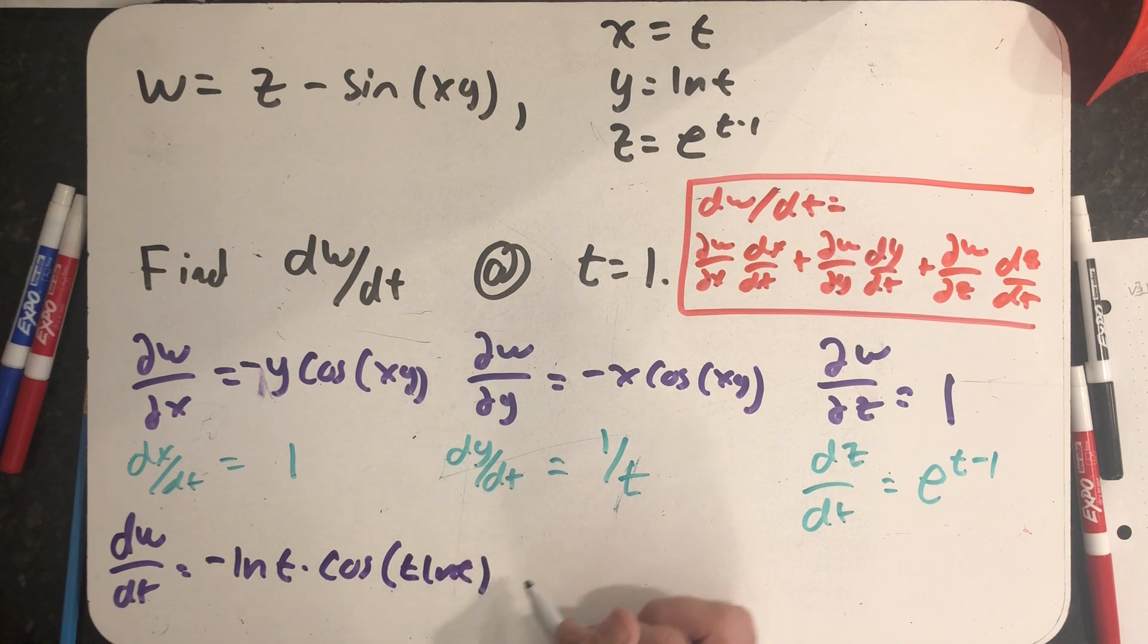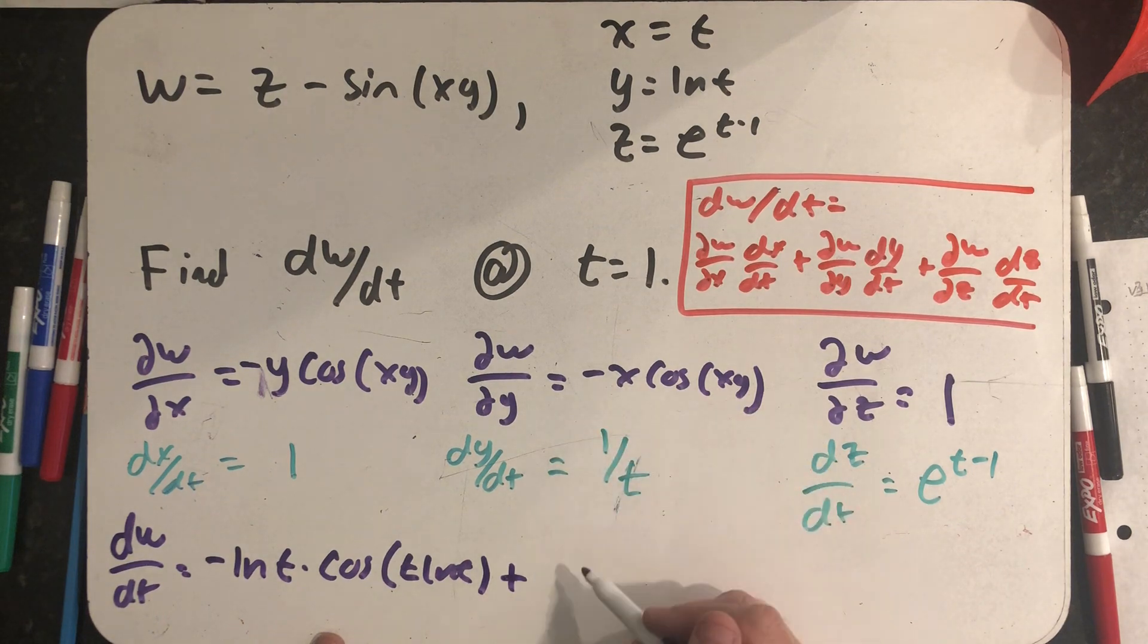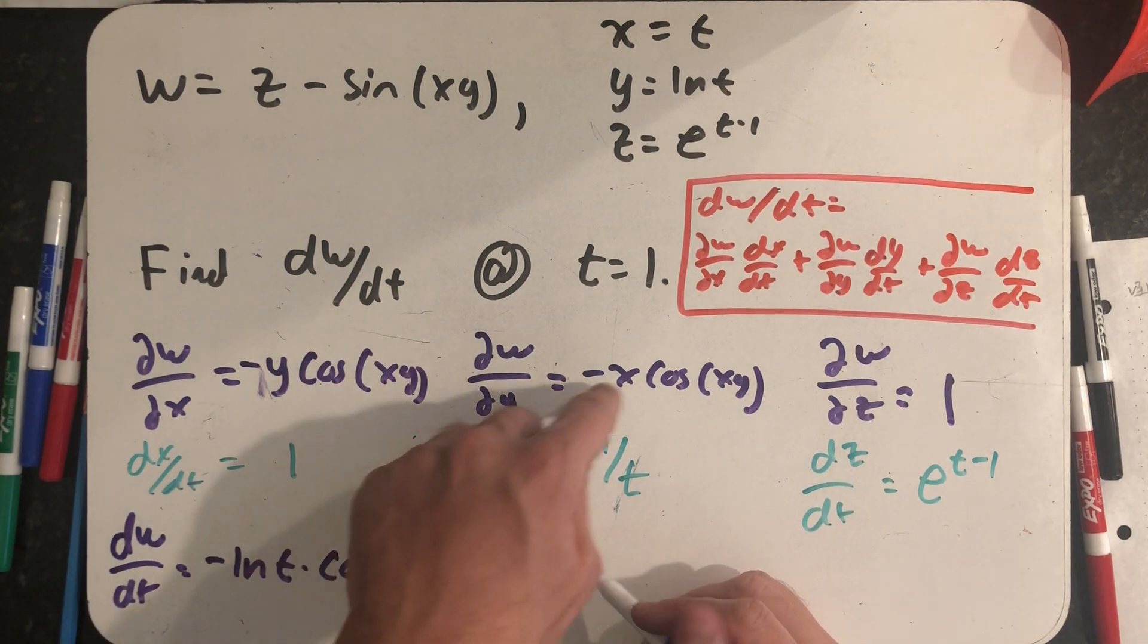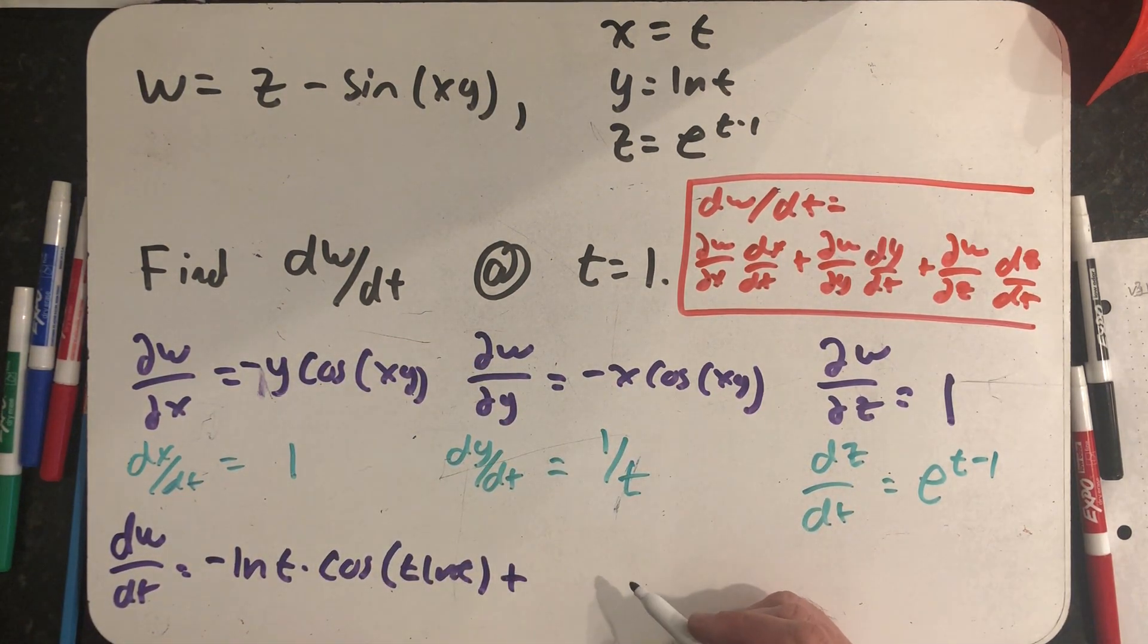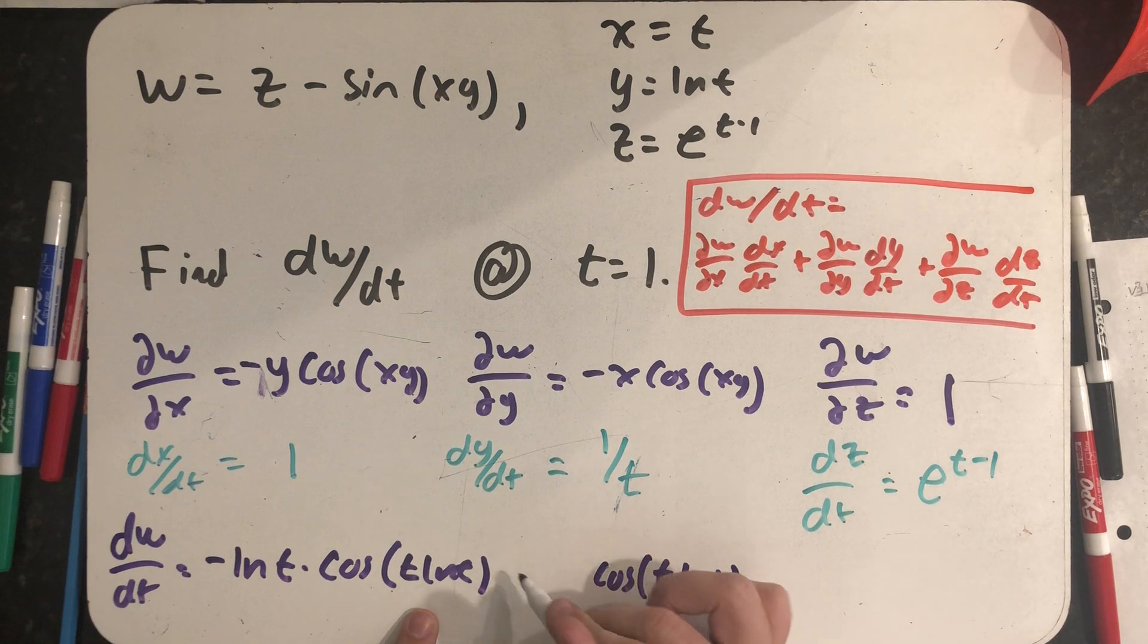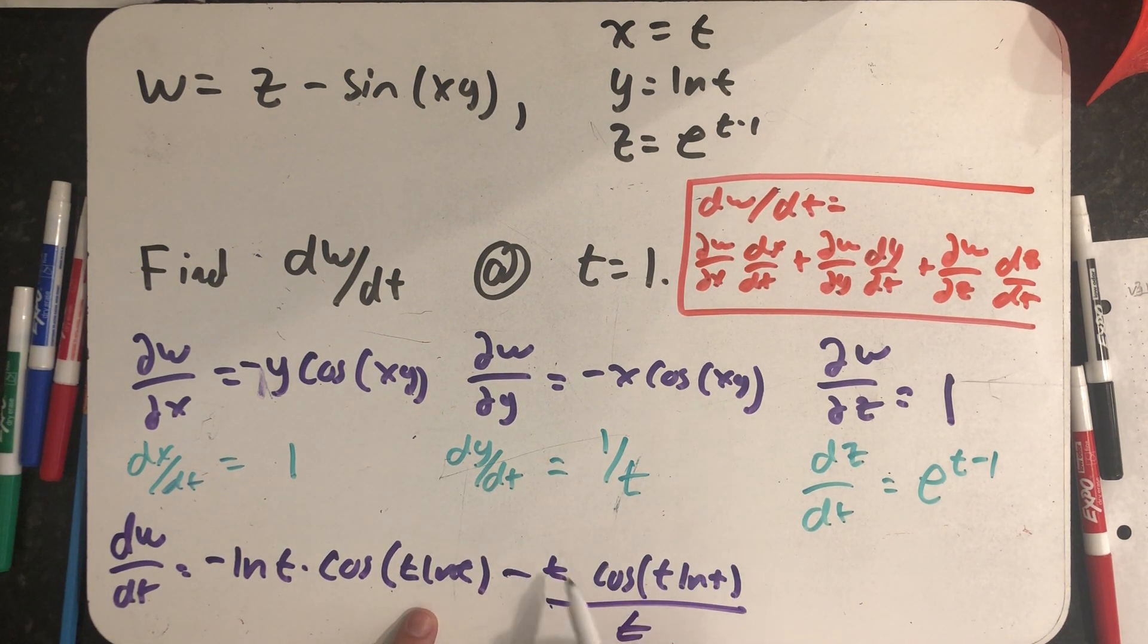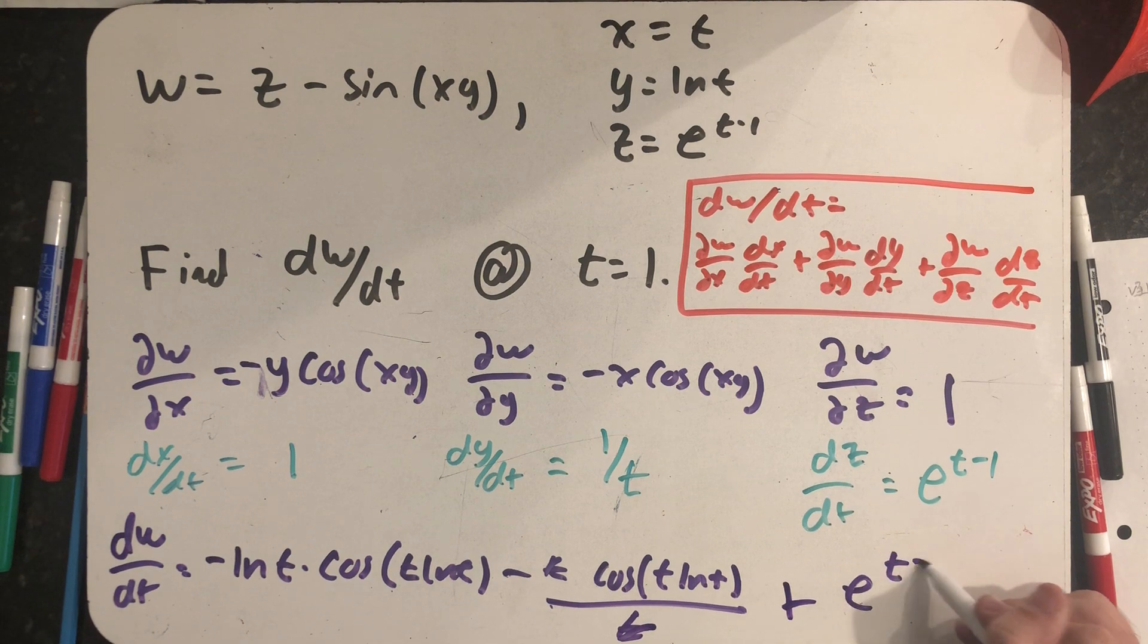Plus the product of these two things. So I have minus x cosine of xy. Well, I know the cosine of xy part becomes the cosine of t natural log of t, times minus x, so minus t out front, times this, so over t. Well, those will cancel and just give me that part in the middle. And then finally, not too much to do here, just an e to the t minus one.